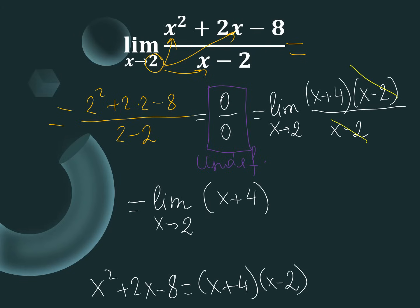We substitute x equals 2 directly: 2 plus 4 gives us 6. This is the correct answer for example 2 — we have no more undefined values, so 6 is the answer for your quiz.